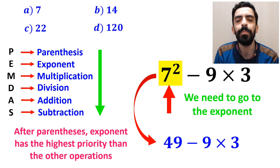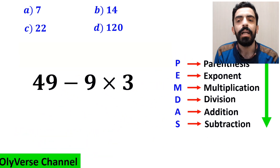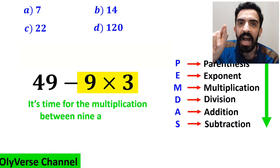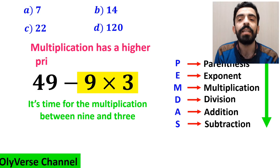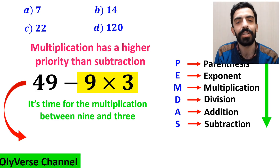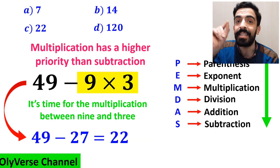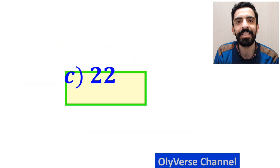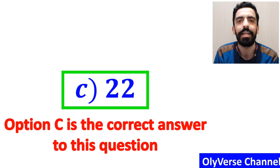So this expression simplifies to 49 minus 9 multiplied by 3. In the final step, it's time for the multiplication between 9 and 3, because multiplication has a higher priority than subtraction. So we write this expression as 49 minus 27, which ultimately gives us the answer 22. Option C is the correct answer to this question.